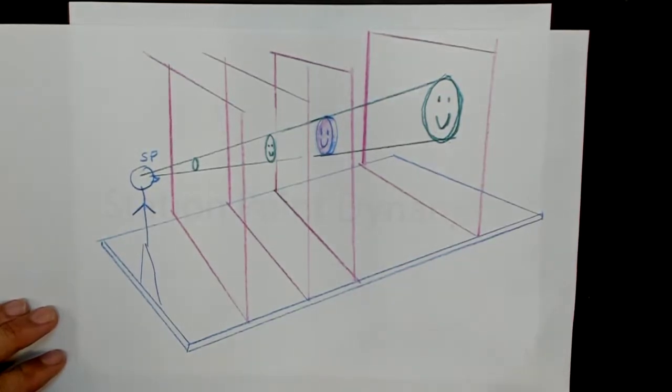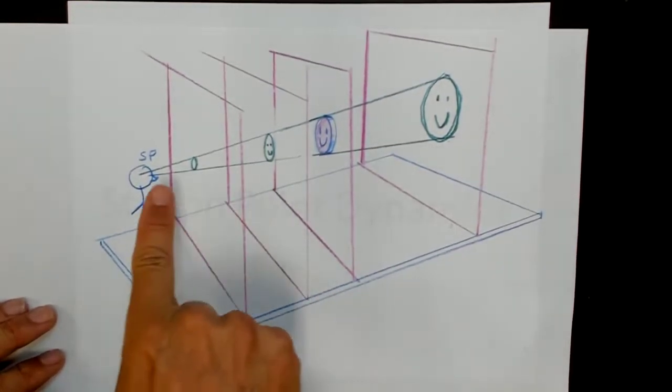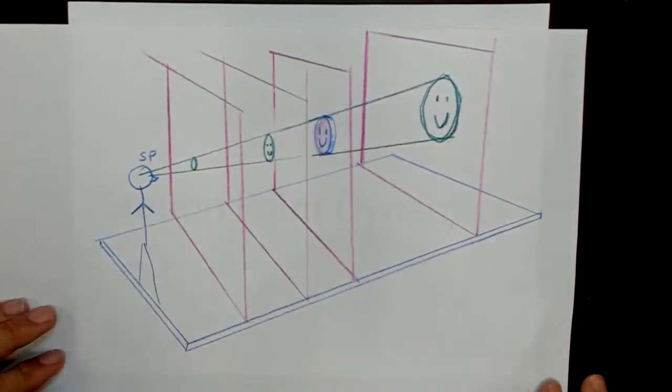So what happens if we keep the picture plane where it is and then the viewer moves back and forth in space.